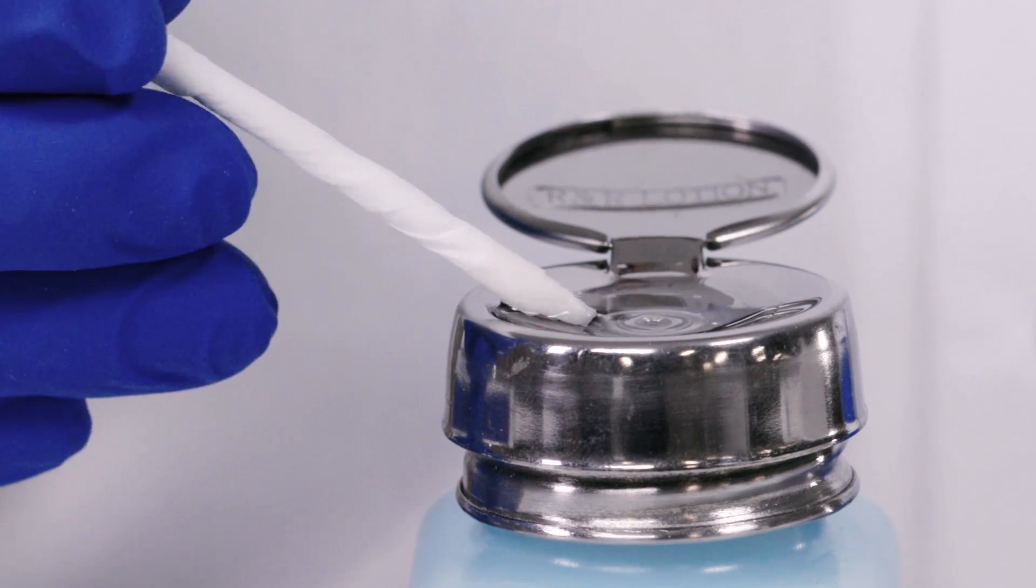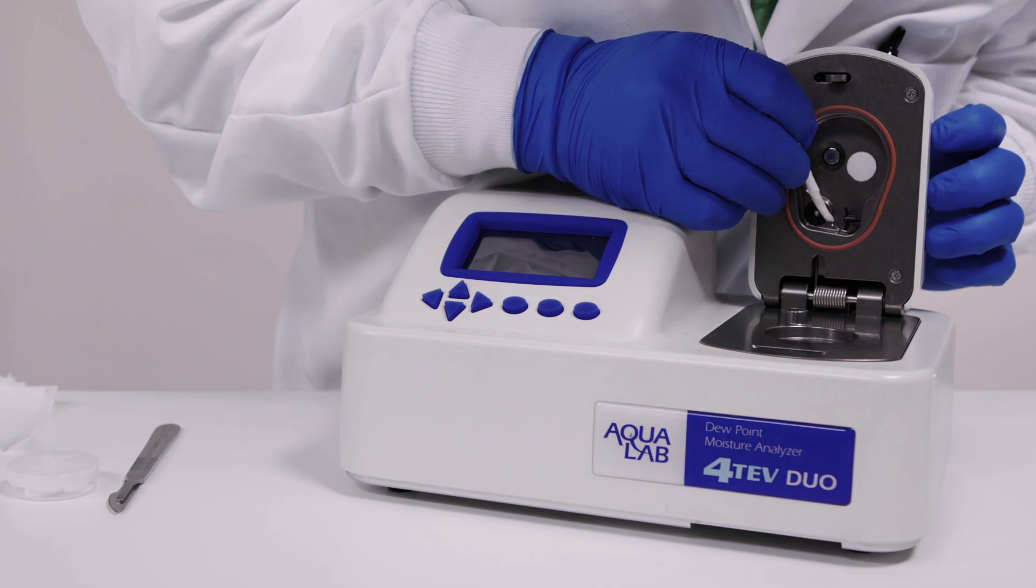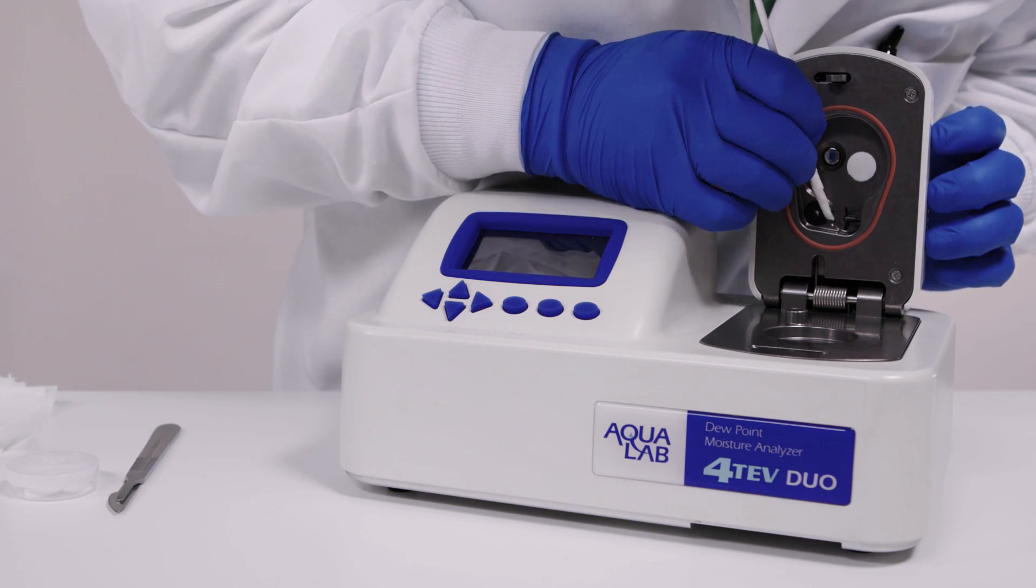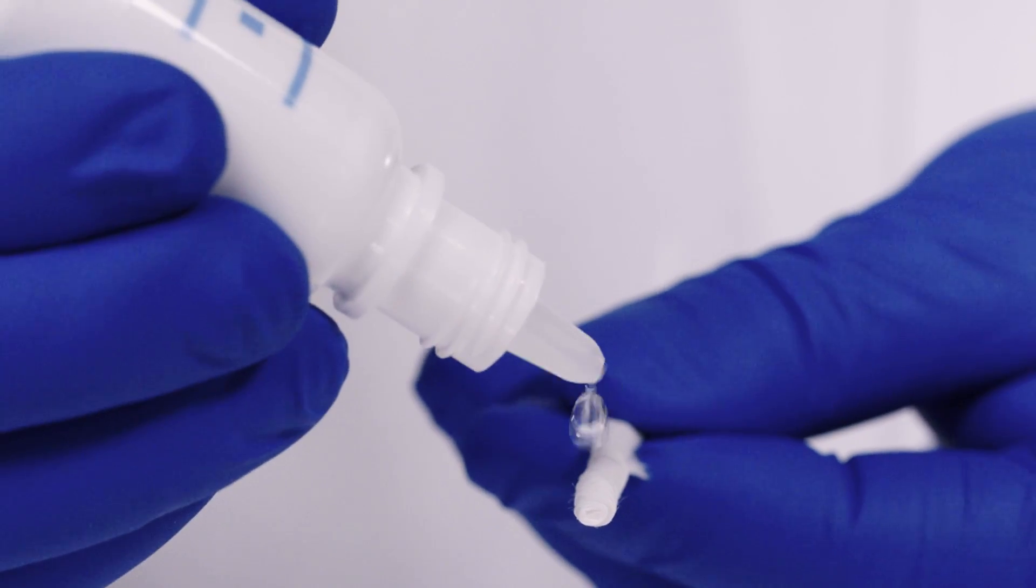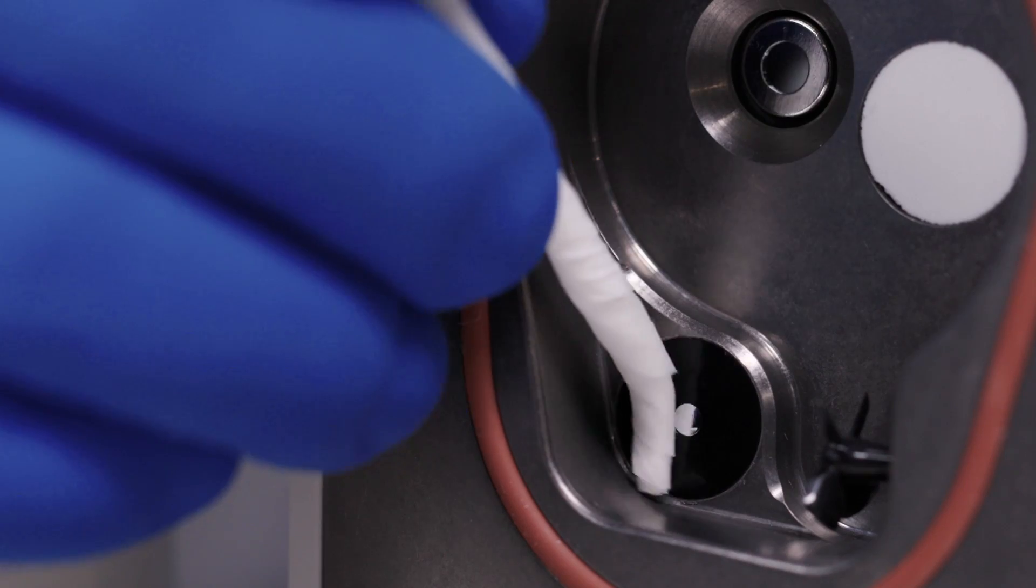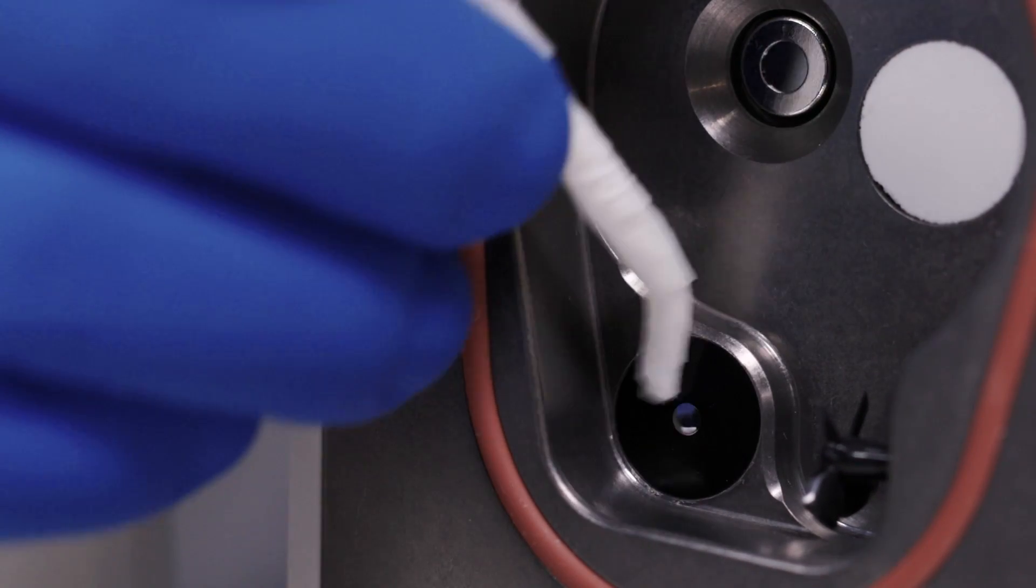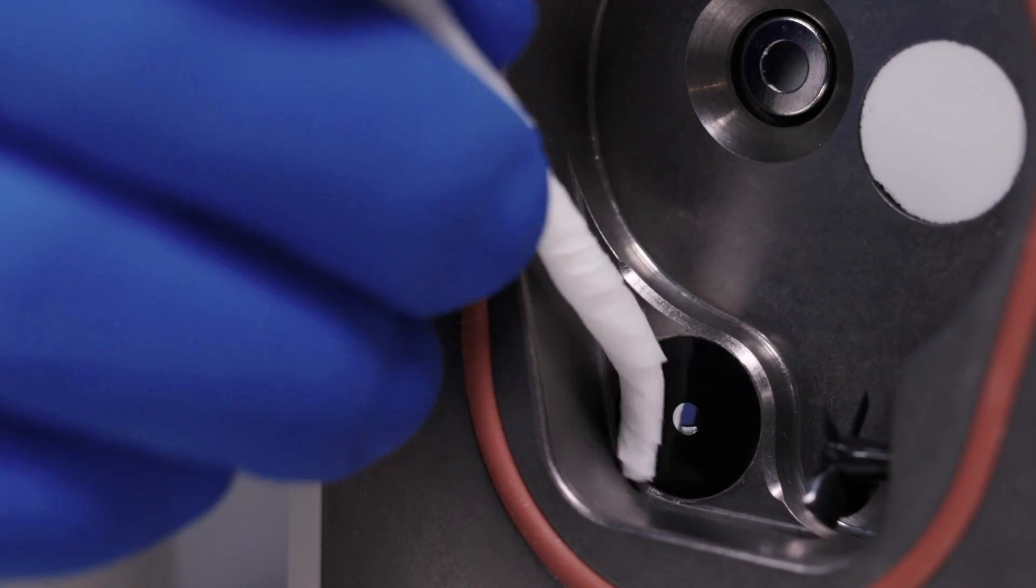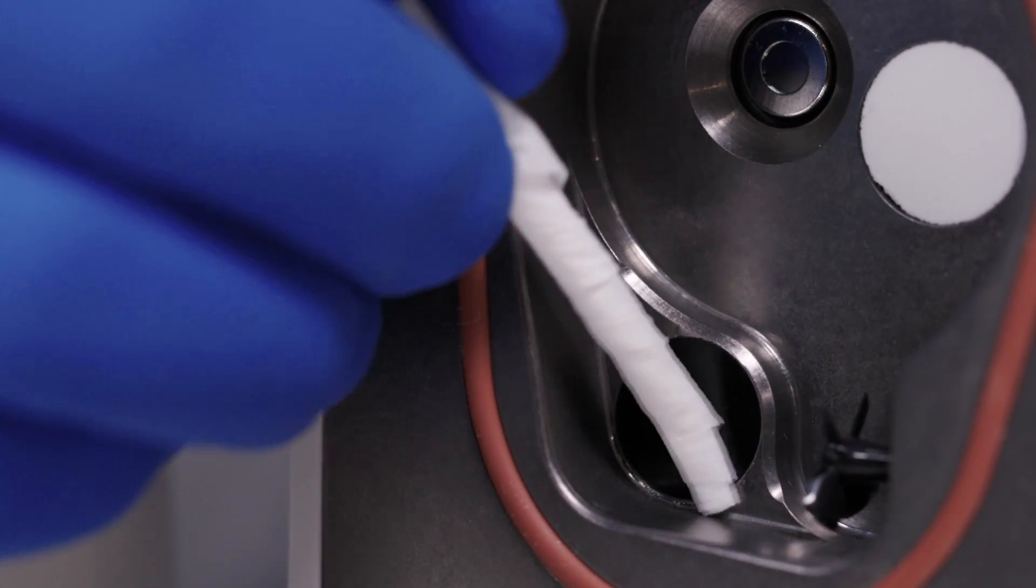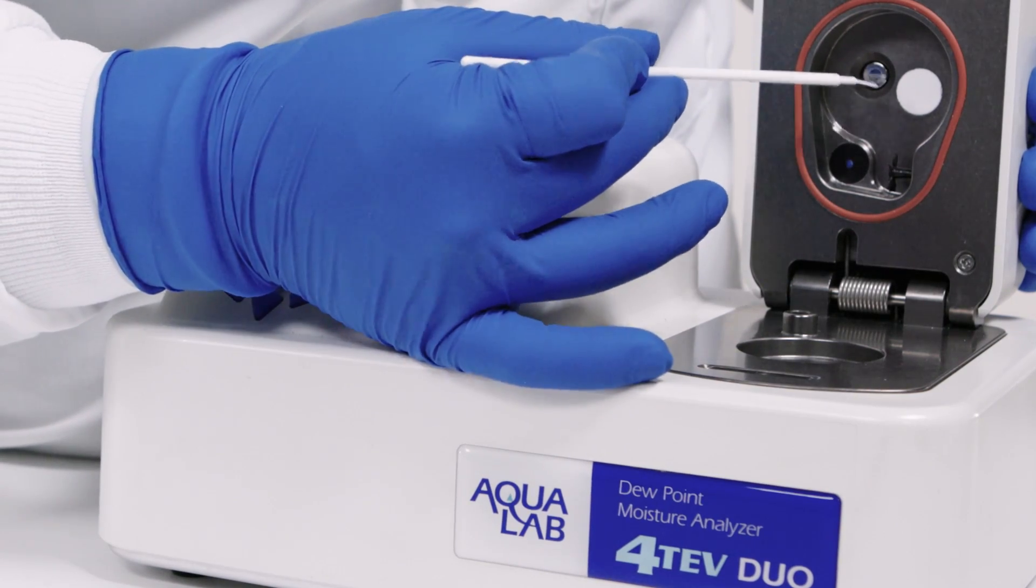This video shows the cleaning of the mirror. The thermopile and the optical sensor should be cleaned in the same way. Clean each sensor separately by wiping across the sensor. Again first with a clean kimwipe and isopropyl alcohol or cleaning solution, then with a fresh kimwipe and distilled water, and finally with a clean dry kimwipe. Repeat the same process for the thermopile and the optical sensor.